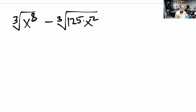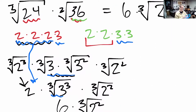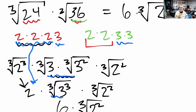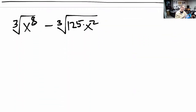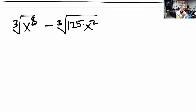The next problem is similar to the first one but we have to deal with a subtraction sign. Just like in that first problem, we need to simplify the roots first by looking for perfect cubes we can take out — things like 2 cubed or 3 cubed — and then pull them out of the radicals. We've got cube roots here, so we're looking for perfect cubes.